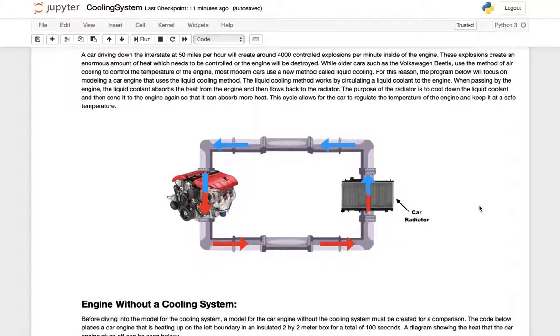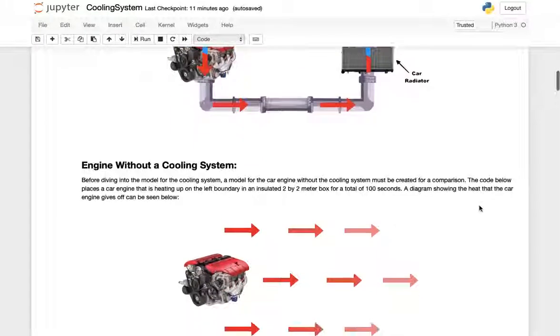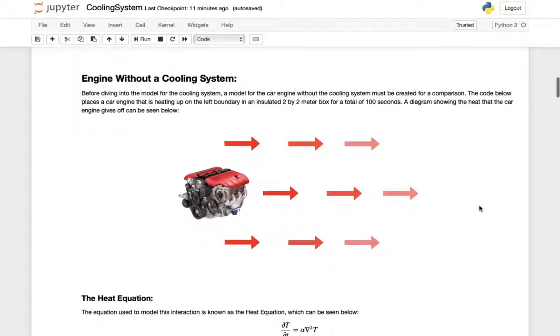Most modern cars operate at around 120 degrees Celsius which is the maximum before they break down. Any farther past this and you're risking destroying your engine. To go into this coding project I want to start off by modeling how a car engine works without this cooling system.